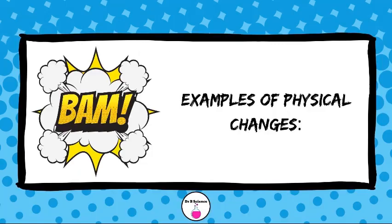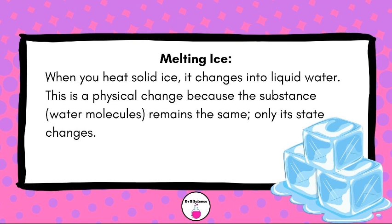Examples of Physical Changes. Melting Ice: When you heat solid ice, it changes into liquid water. This is a physical change because the substance — water molecules — remains the same; only its state changes.